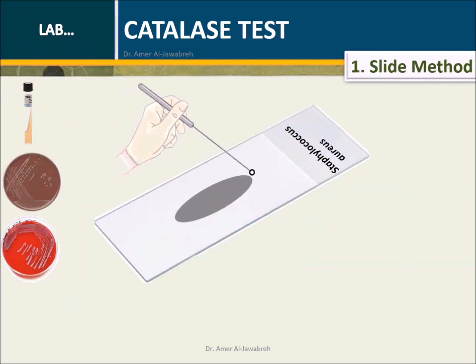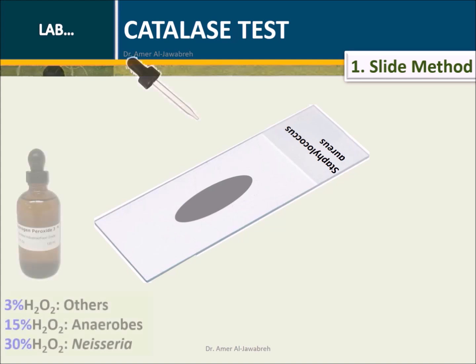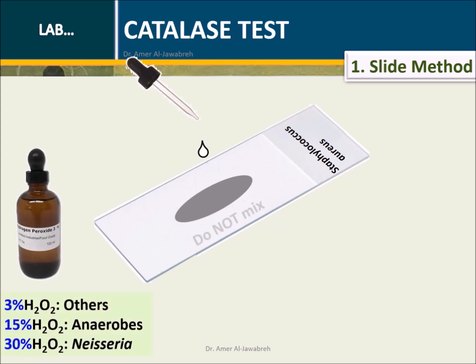Slide method: On a labeled slide and using a sterile loop, pick a few colonies from the culture plate or tube and transfer onto the slide. Add one drop of three percent hydrogen peroxide on the sample. Do not mix.